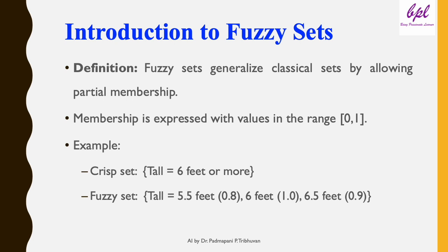In a fuzzy set, the definition allows for partial membership with values ranging from 0 to 1. The fuzzy set defines 'tall' as a gradual concept: a person who is 5.5 feet tall is 80% tall (membership 0.8), a person who is 6 feet tall is fully tall (membership 1.0), and a person who is 6.5 feet tall is 90% tall (membership 0.9). Instead of being rigid, fuzzy sets allow for ambiguity and gradual transitions.